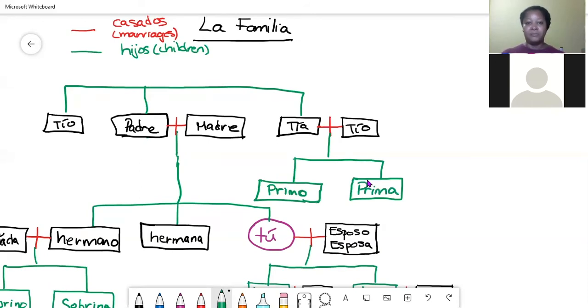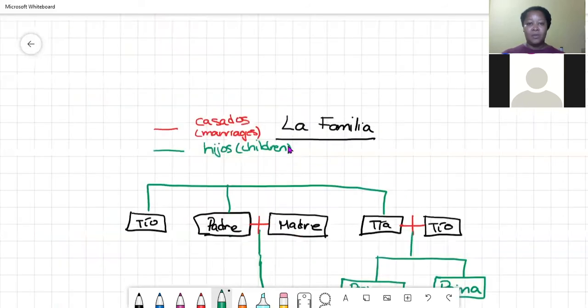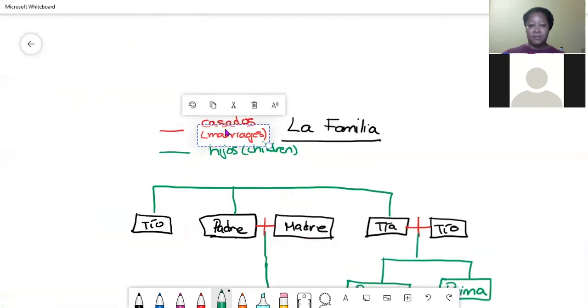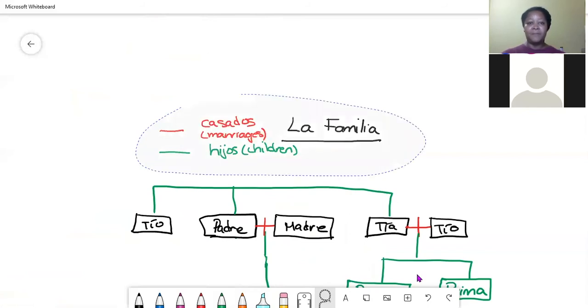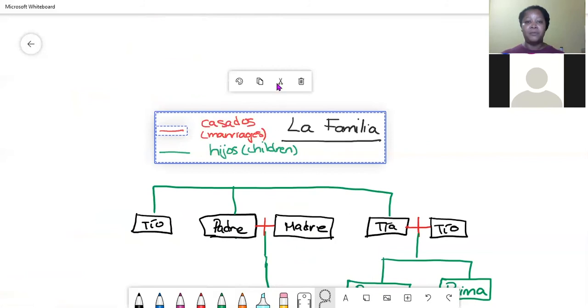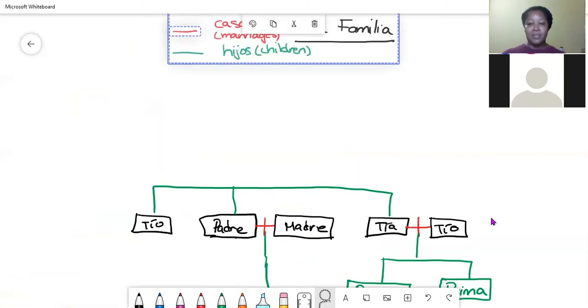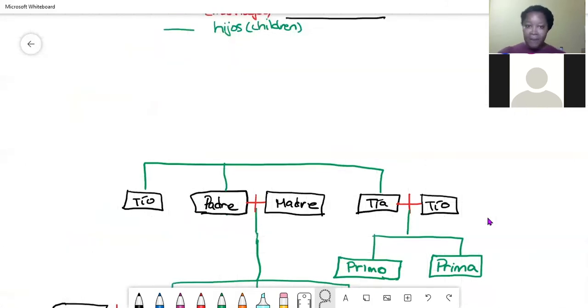Let's go up some more. We're going to grab this again and move it all up. So let's continue. Your padre came from somewhere, did he not? And your padre came from your abuelo. So we have your abuelo over here from whom your padre came.